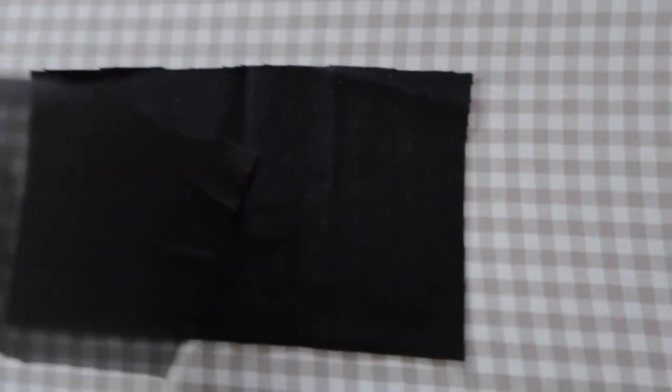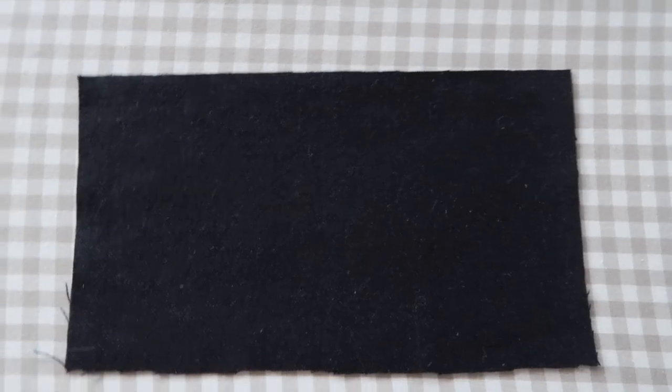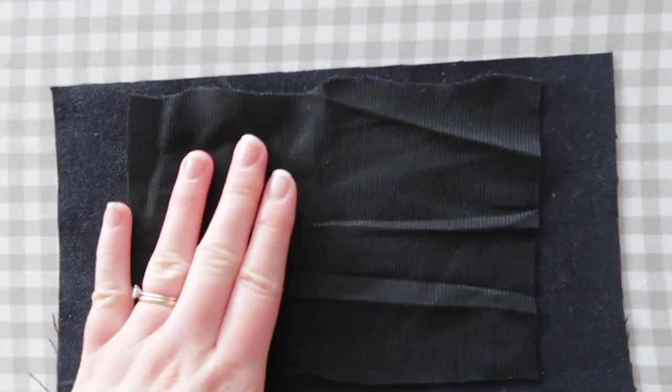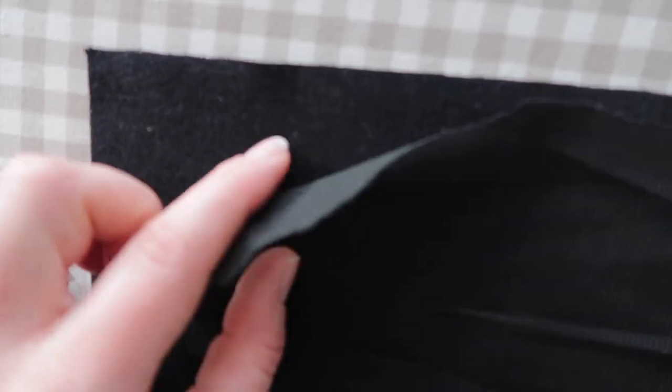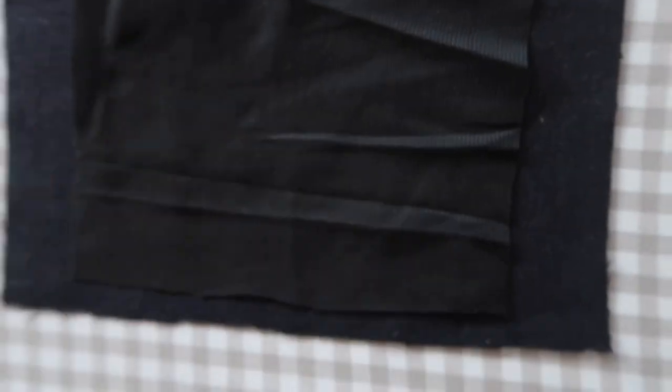What we're going to do, since we're home, we're going to heat up the iron, put it on maximum. Now that it's ironed, I'm going to take my fusing and make sure that the sticky side is on the fabric side here, and the soft side is on the outside.